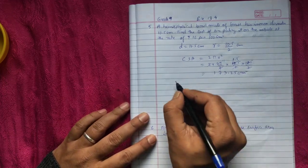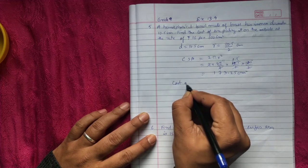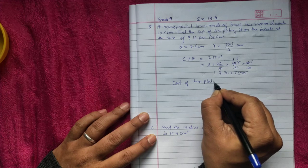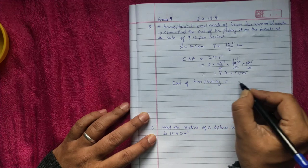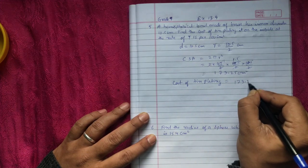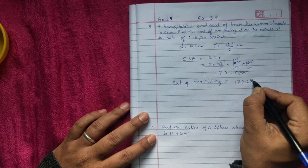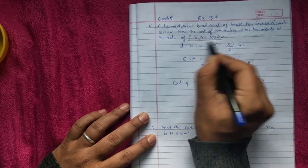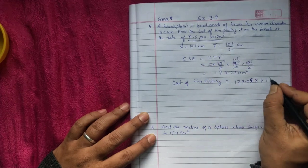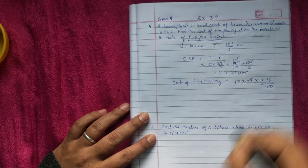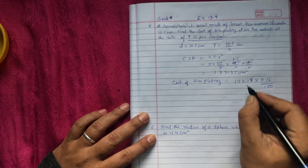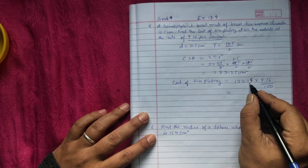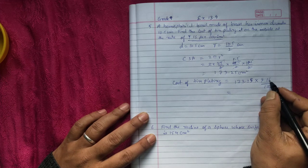Now find the cost of thin plating. If you know the area just multiply area into the rate. Rate is given as rupees 16 per hundred. Multiply these two, if you multiply 173.25 into 16 you'll get 2772.00.